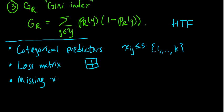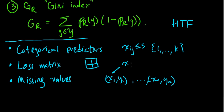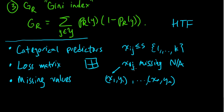Another issue that might come up is missing values. We were assuming we had complete data pairs x_i, y_i, but it might turn out that some values — like x_{1,j} for some j — are missing, just not available, N/A. The recommended way to handle this is to use what are called surrogate variables, though I won't go into that in detail.